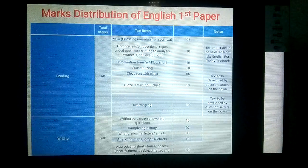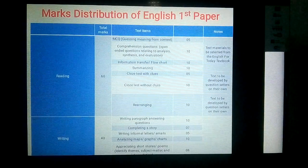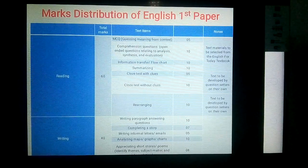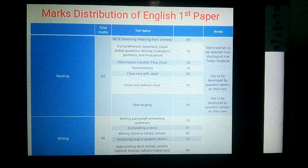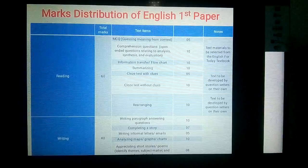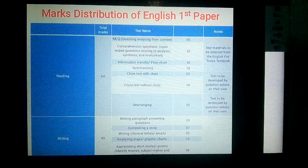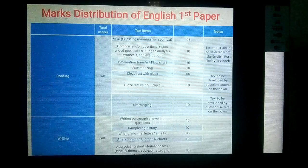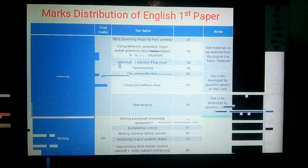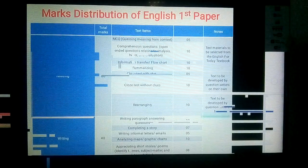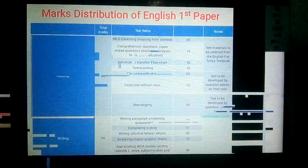Then comprehension questions, which carry ten marks. Open-ended questions are given to measure higher level skills like comprehending, analyzing, synthesizing, and evaluating. Each question carries two marks. The next item is information transfer or flowchart, which carries ten marks and tests your level of understanding.